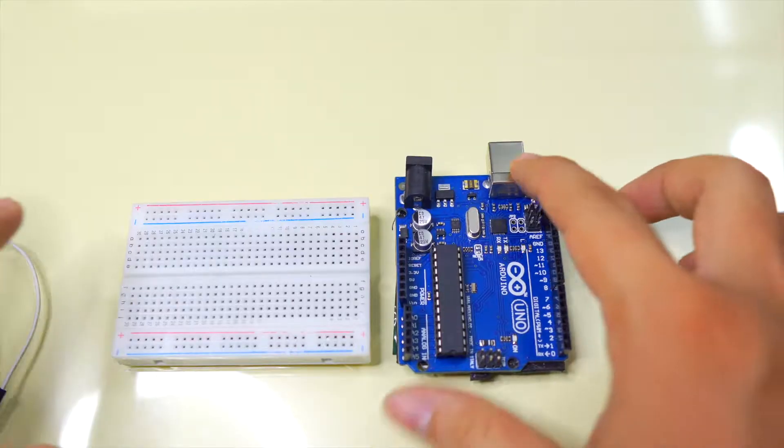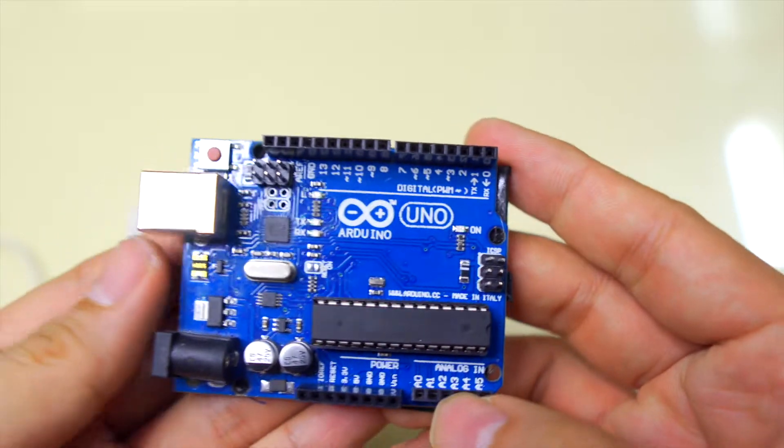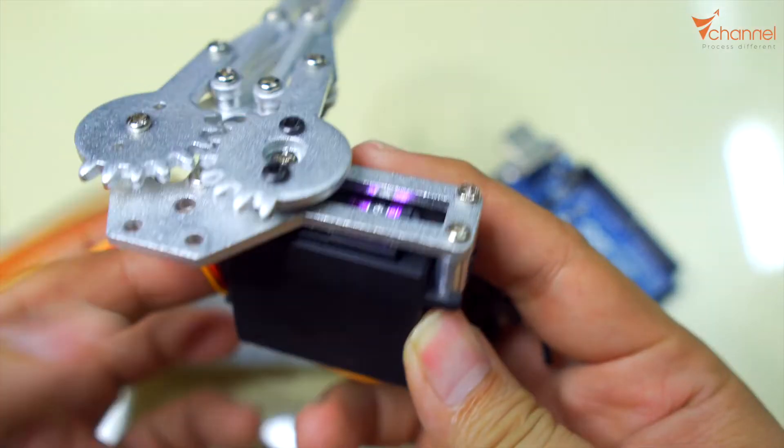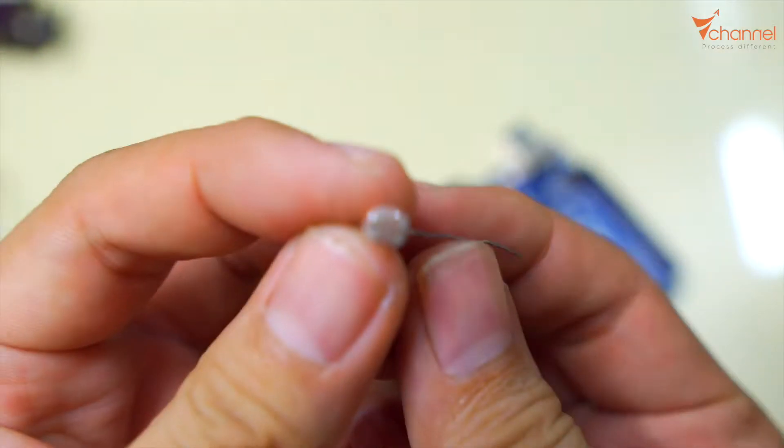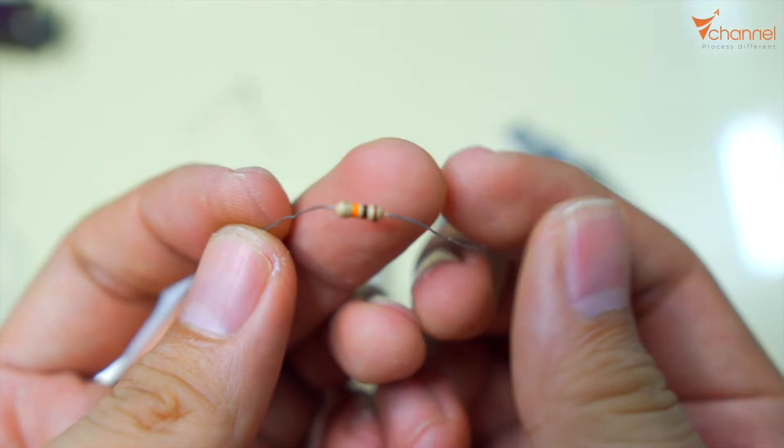Okay, let's start. First of all, we need Arduino Uno or Arduino Nano. Next, we need a servo, photo resistor, 10 kilohm resistor, and some wire.